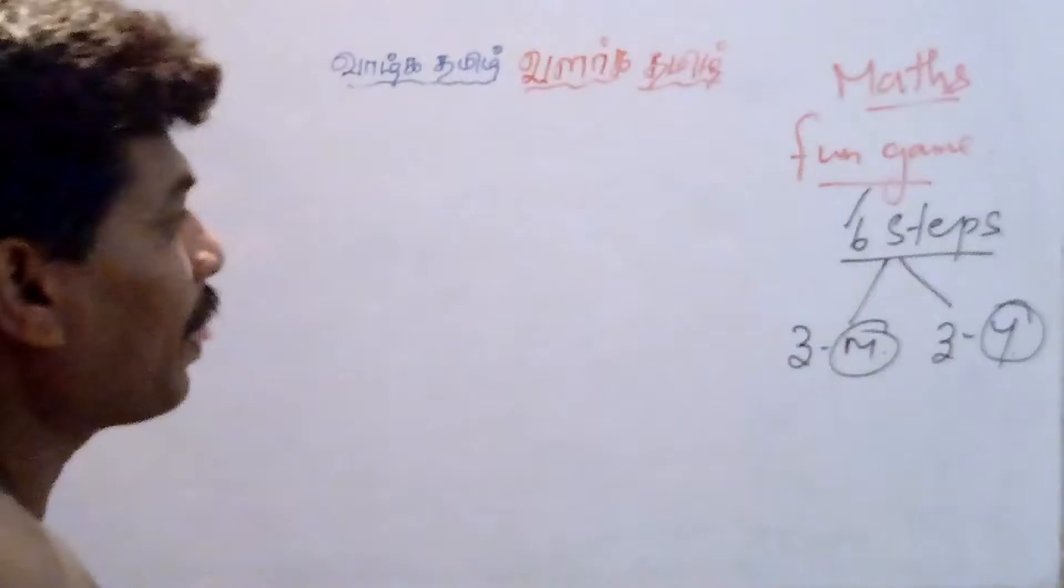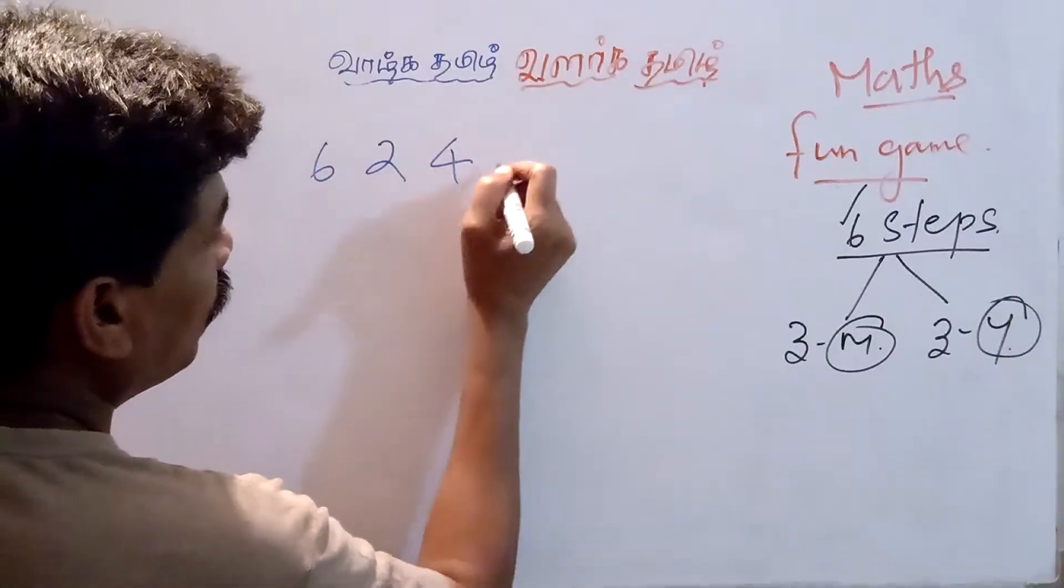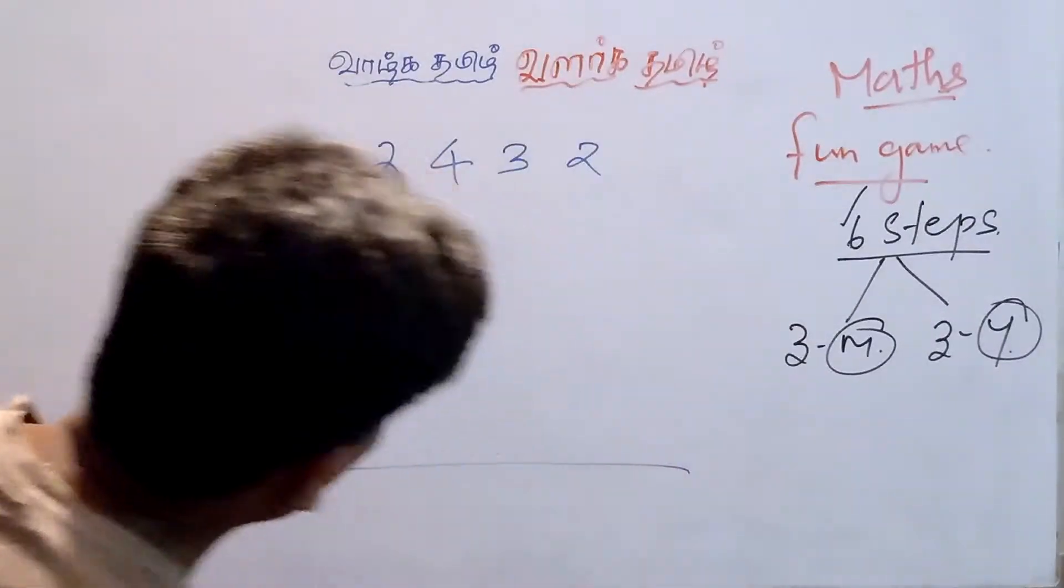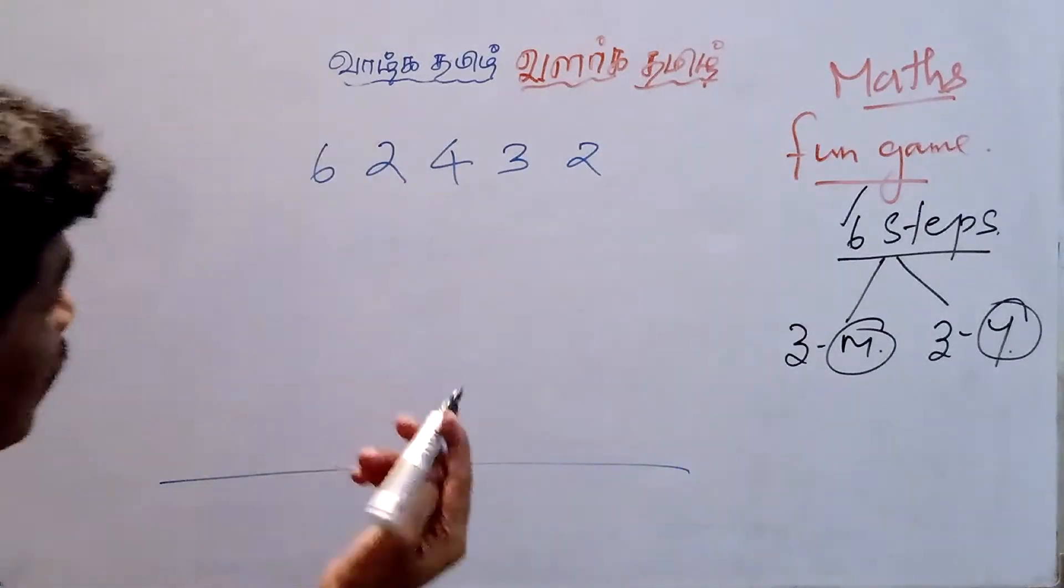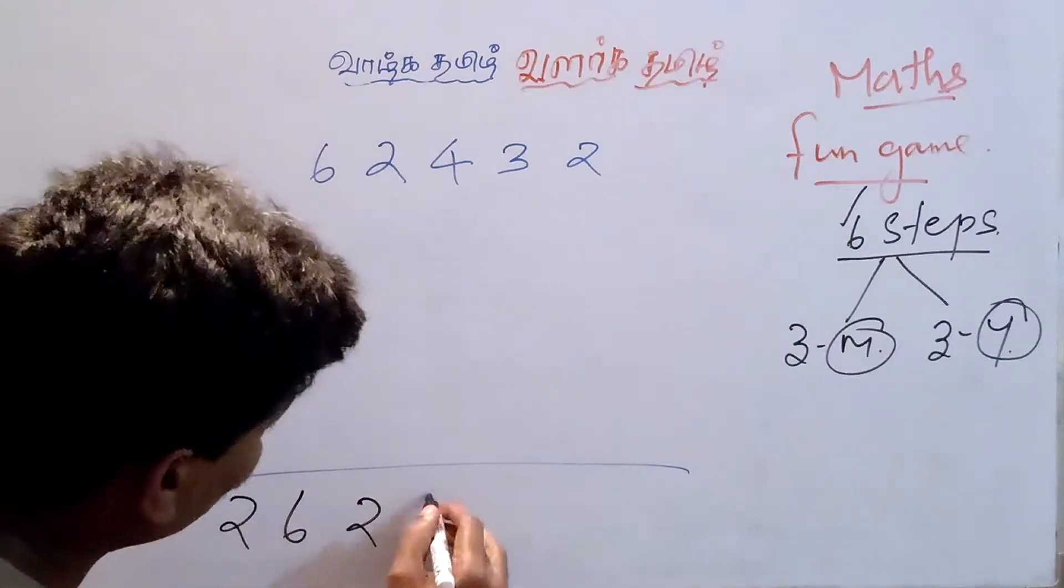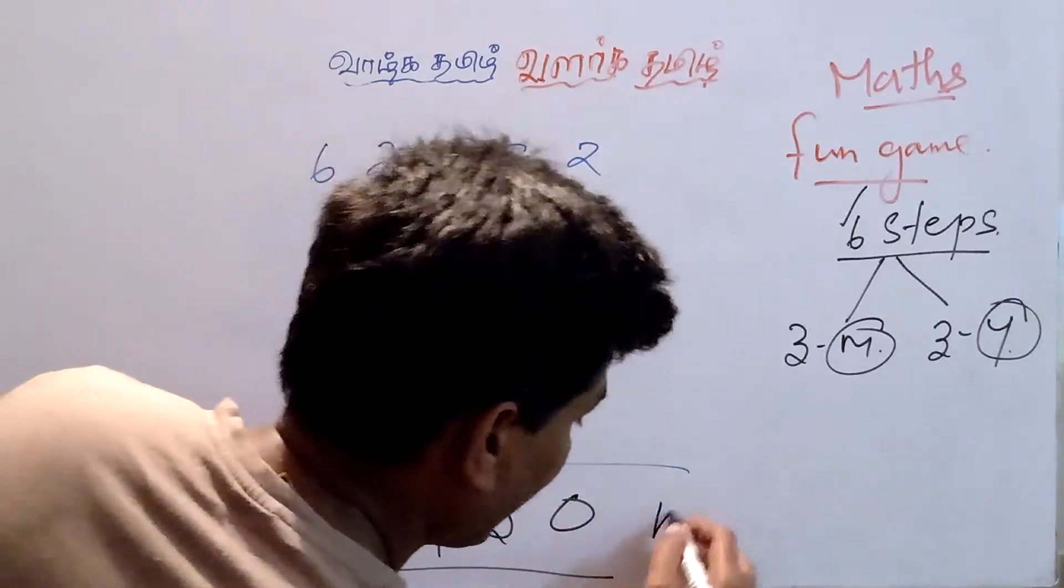Say some numbers: 6, 2, 4, 3, 2. Now I am going to write the answer. The answer is 2, 6, 2, 4, 3, 0.